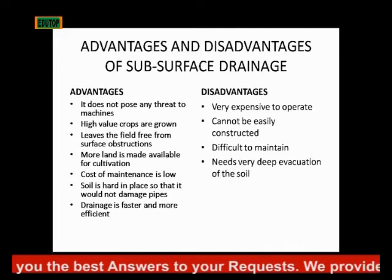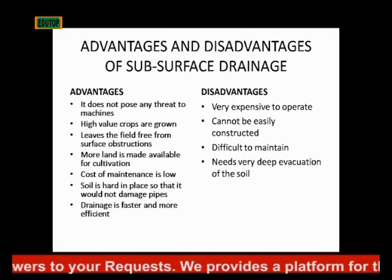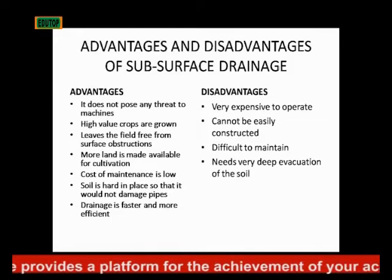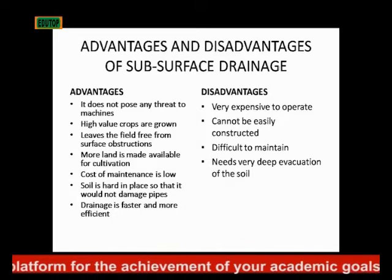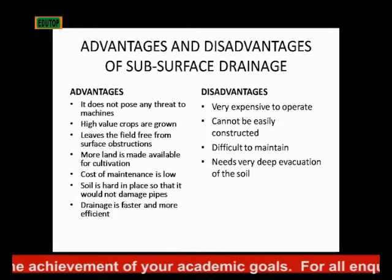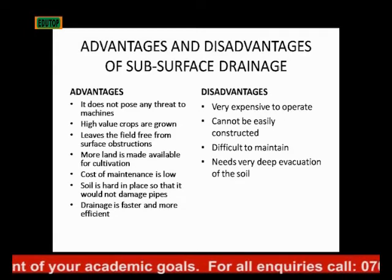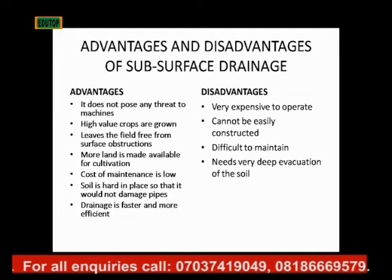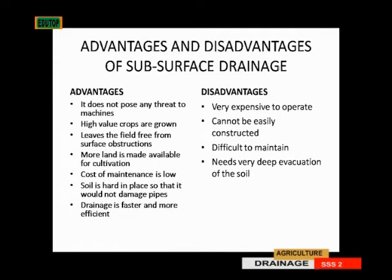The disadvantages of subsurface drainage system. Number one is that it is very expensive to operate — it will cost you more money than surface drainage because you have to run pipes underground, so it is more work. Then, it is not easily constructed and requires technicality. Then, it is difficult to maintain — since it is under the ground, you may not know on time when there is a fault that needs correction before it leads to a bigger issue.